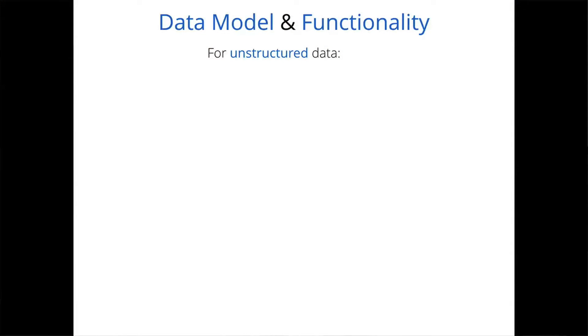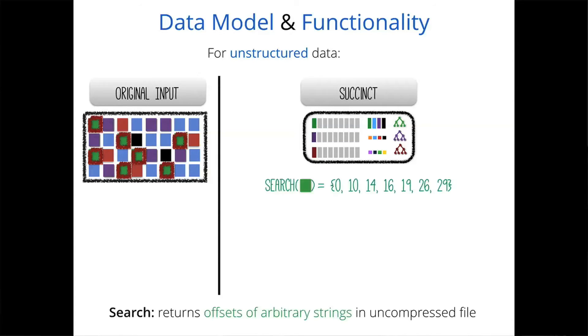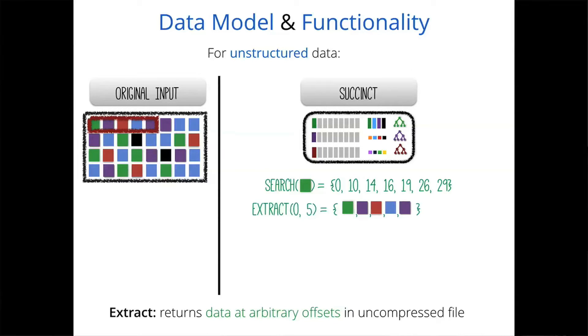The secret sauce behind this is a single unified interface combining all different data models: a flat unstructured representation of the data. Before explaining how we integrate different data models into this representation, let me describe what operations we support. I have the same running example — a flat file of differently colored blocks on the right, and on the left the Succinct compressed representation. All queries yield results in terms of the flat compressed data. For instance, search yields offsets into the uncompressed file where search terms occur, and random access is supported via the extract functionality — in this example, fetching the first five blocks.